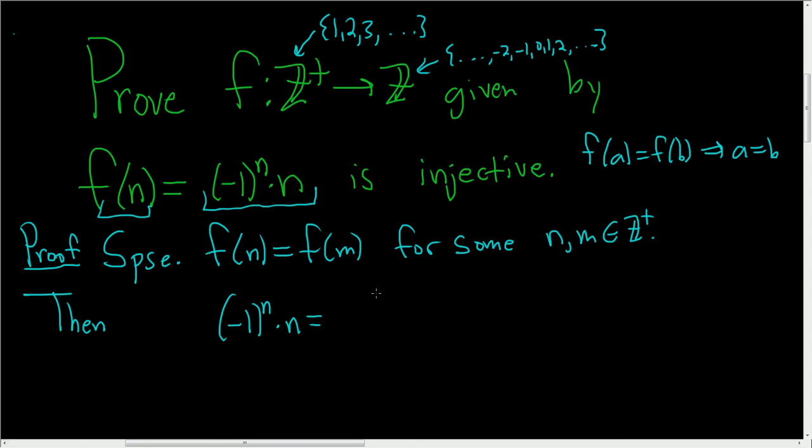And that equals f(m). You simply replace n with m, so this is (-1)^m · m.